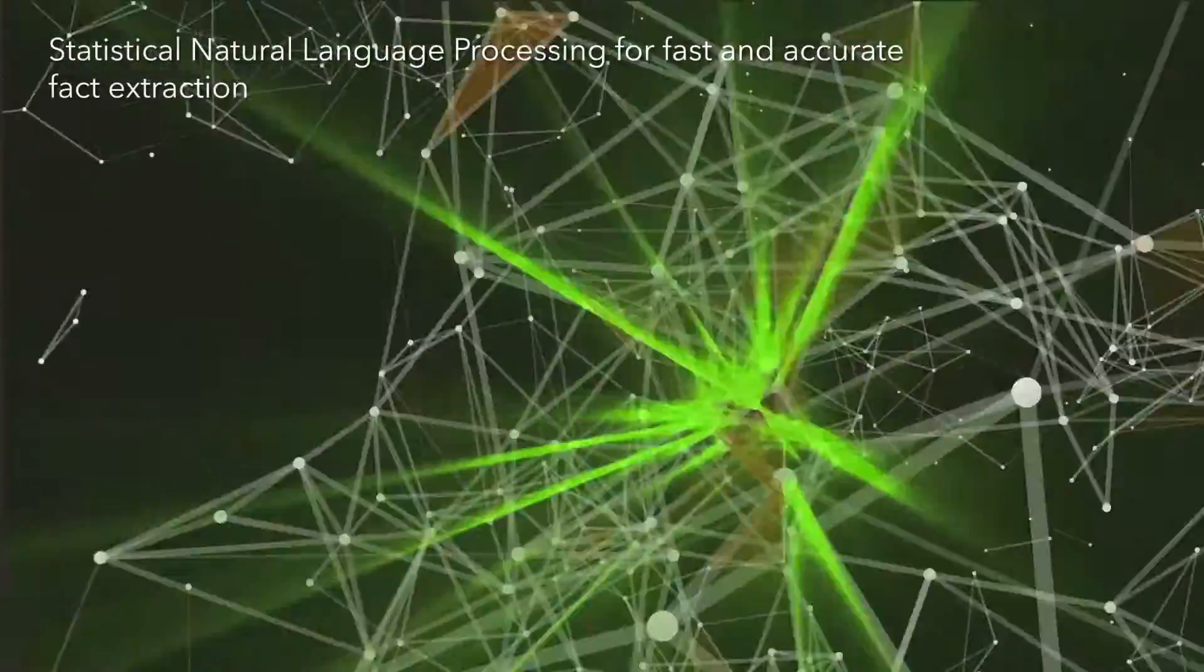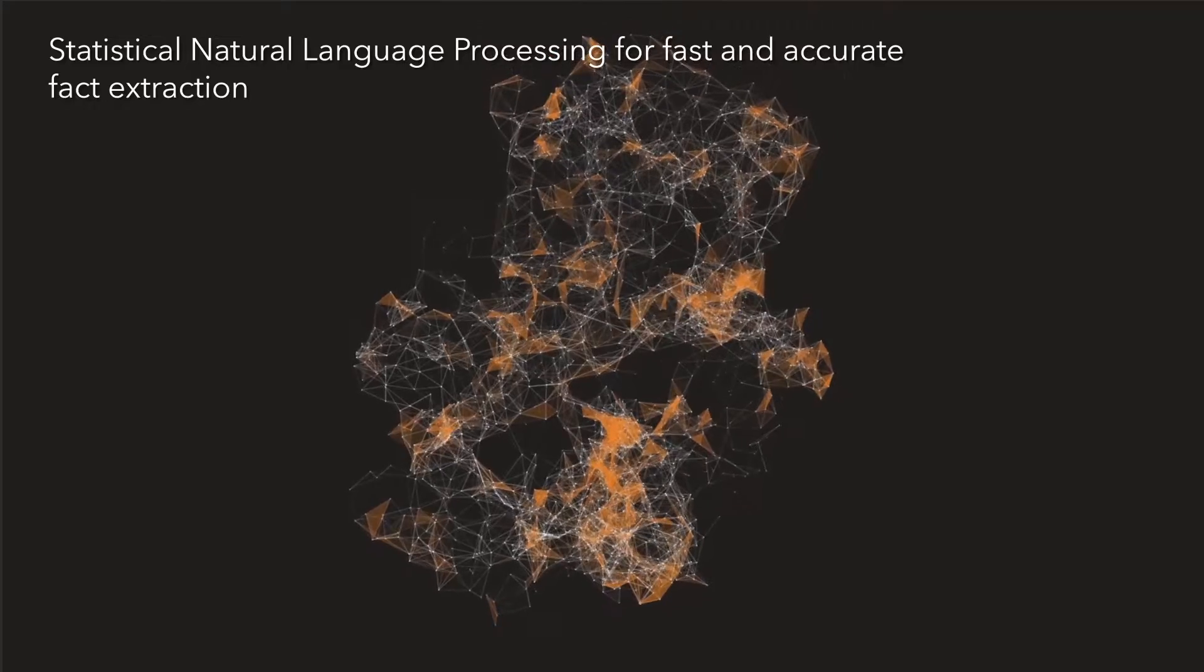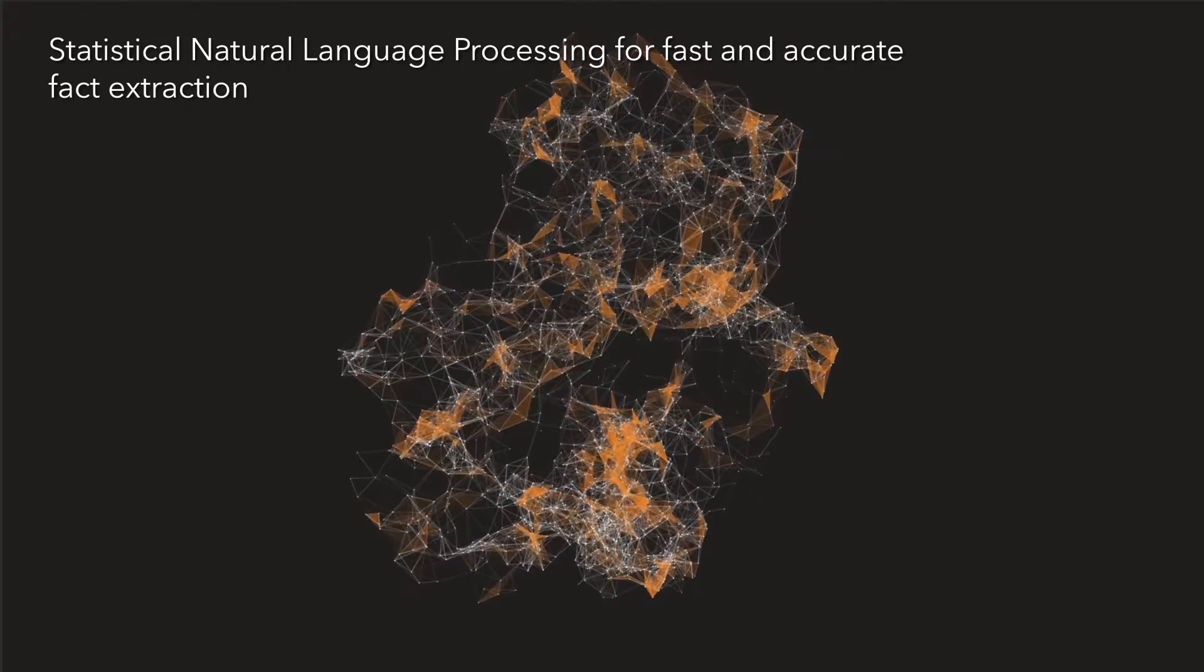DDIQ has mapped thousands of open web sources using statistical natural language processing for fast and accurate fact extraction, even auto healing them when formats or styles change.